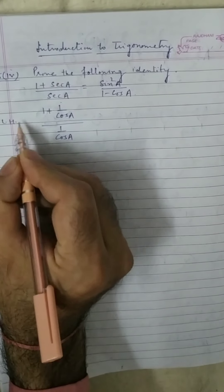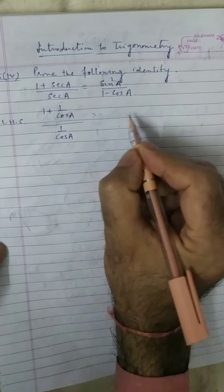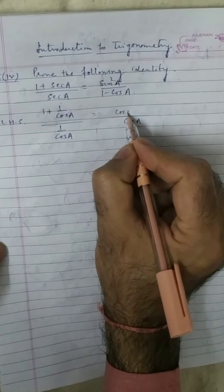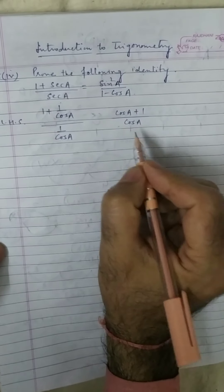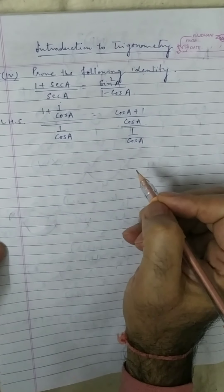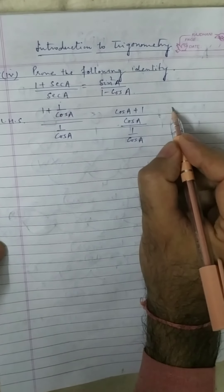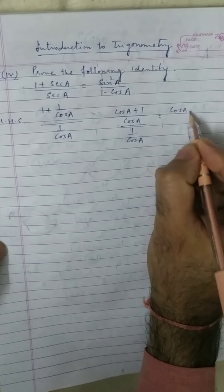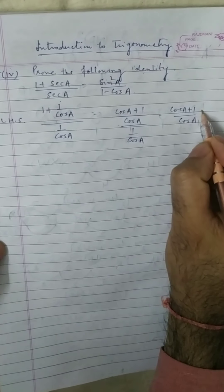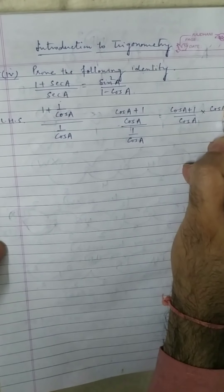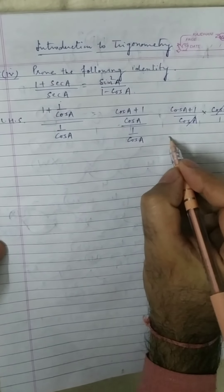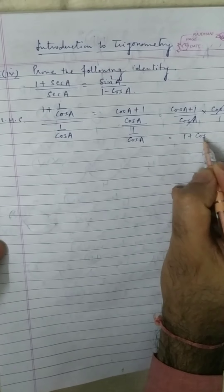Take the left hand side. Take LCM: cos a. So we get cos a plus 1 upon cos a, divided by 1 upon cos a. Now solve it: cos a plus 1 upon cos a, multiplied by cos a upon 1. Cos a cancels out, so that can be written as 1 plus cos a.